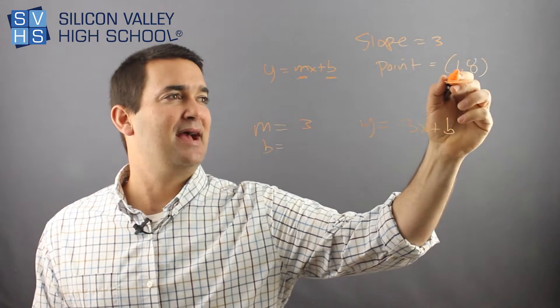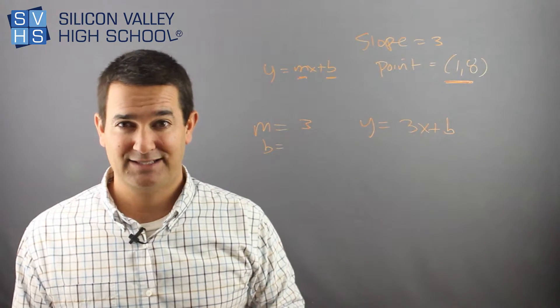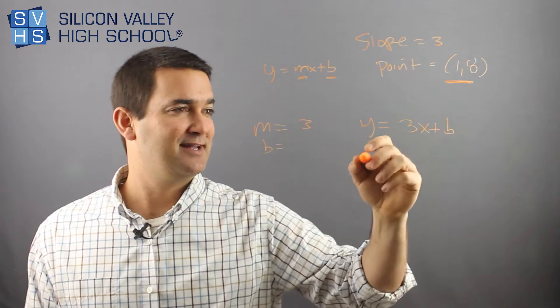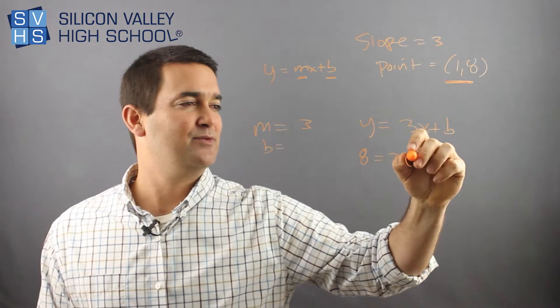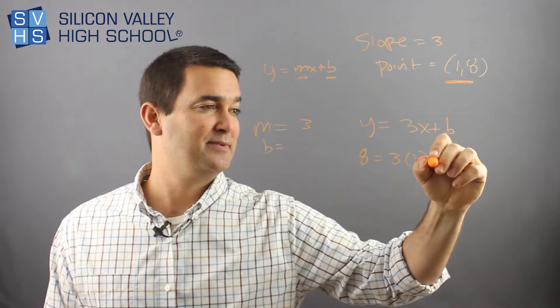Up here they gave me an x and a y. That's a point, x, y. So let's plug these suckers in. So eight goes in for y equals three times my x value was one. That's kind of a small one. Plus b.